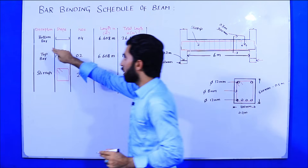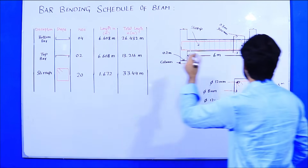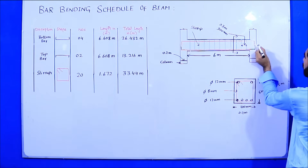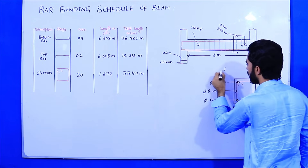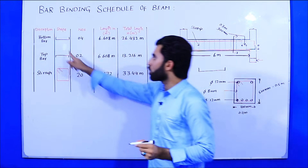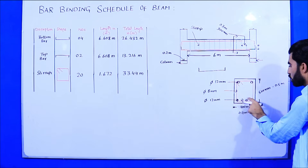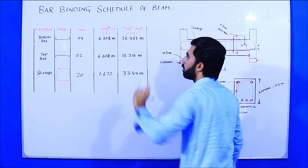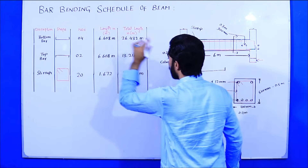First we will find the length of the bottom steel bar. The shape of the bottom bar has development length hooks at both ends. We have four numbers of steel bars at the bottom. The length of one steel bar is 6.608 meters.